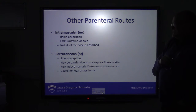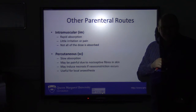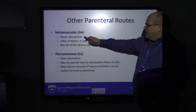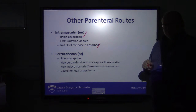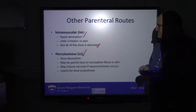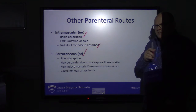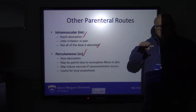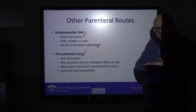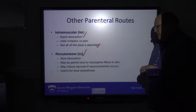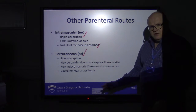Intramuscular is probably one of the easiest routes to give. There is little irritation or pain, though that depends on which muscle you use. Although drug is rapidly absorbed from muscle, you don't get 100% absorption as with IV. With subcutaneous routes — just under the skin — absorption is very slow and can be more painful, because the skin is loaded with nociceptive pain fibres. However, subcutaneous delivery is very useful for the administration of local anaesthetics, for example.